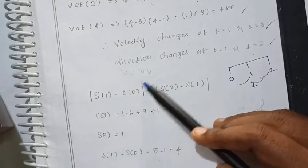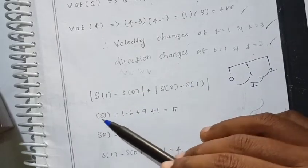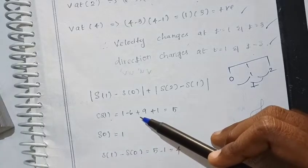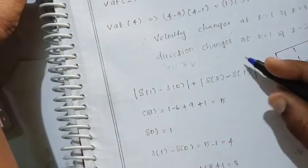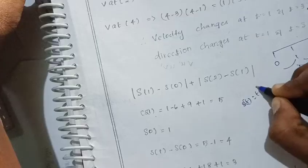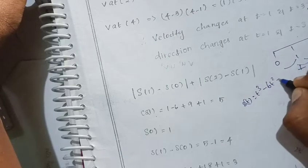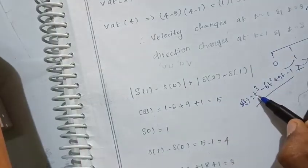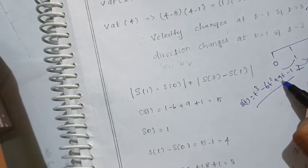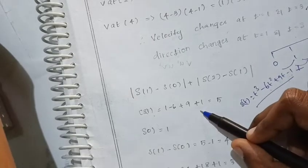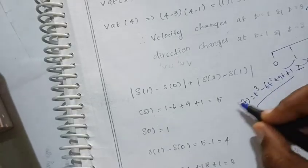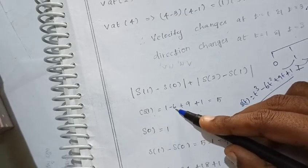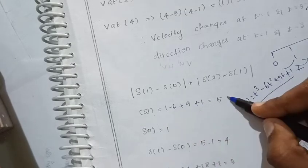We substitute into s(t) = t³ - 6t² + 9t + 1. For S(1): 1³ - 6(1²) + 9(1) + 1 = 1 - 6 + 9 + 1 = 5. For S(0): 0 - 0 + 0 + 1 = 1. So S(1) = 5 and S(0) = 1.